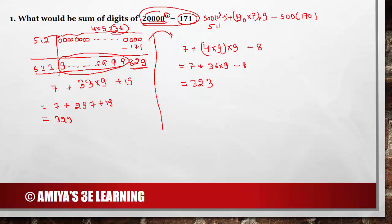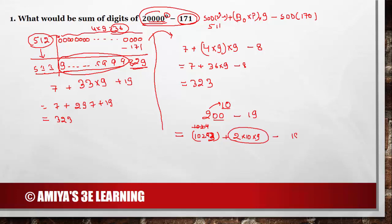I hope it is clear. If not, let's solve a few more questions. Consider 200 raised to power 10 minus 19 — what would be the sum of digits? We know 2 raised to power 10 is 1024, but we are not going to work on 1024; we are going to work on 1023. Because instead of 512, we subtracted 1. So 2 raised to power 10 is 1024, we work on 1023. 2 into 10 gives the number of zeros, and the summation works out to 3, 2, 5 — that is 2180 minus 9, which is nothing but 177.